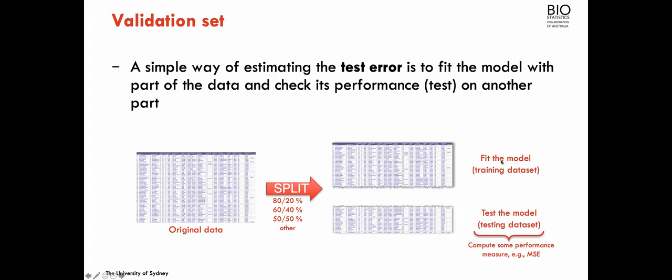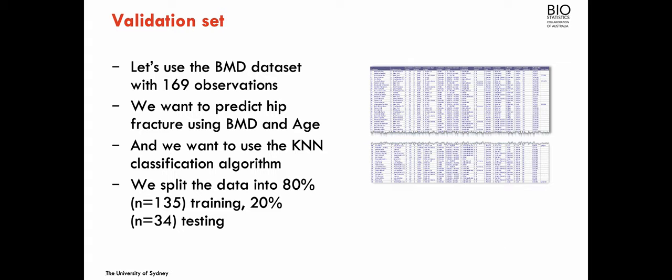We use part of the data to fit the model and part of the data to test its performance. Let's use the bone mineral density dataset with 169 observations. Suppose we want to predict hip fracture using two variables — bone mineral density and age — and we're going to use the KNN classification algorithm. The idea is to choose the best number of neighbors for the classification.